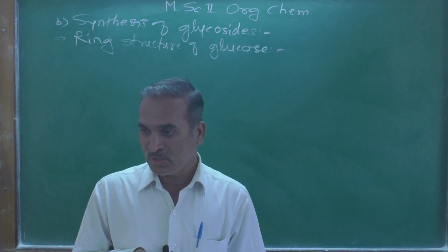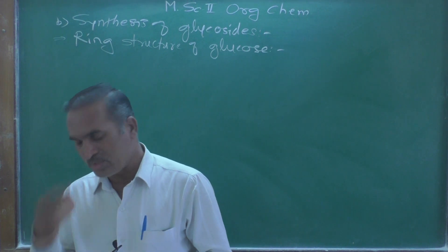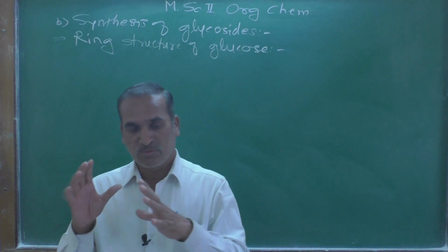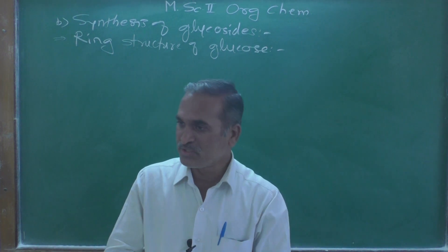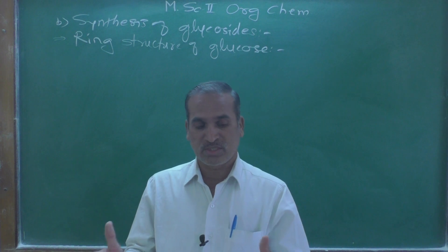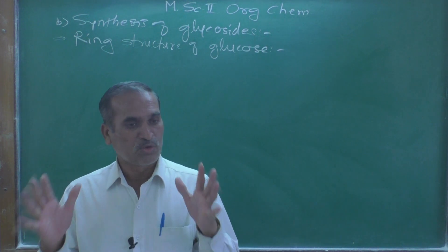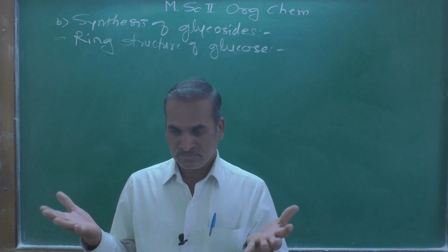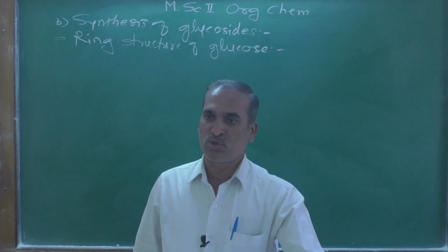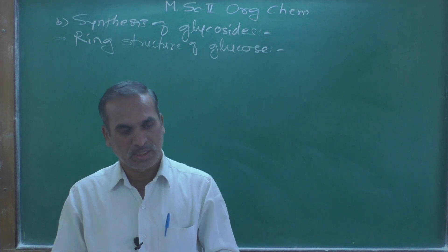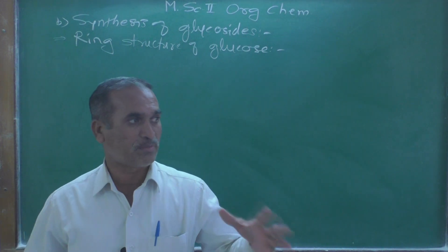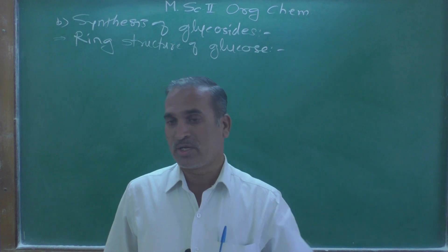Why is it necessary to study the ring structure of glucose? So far we have considered glucose as an open chain compound — a polyhydroxy aldehyde or ketone. Monosaccharides do not get hydrolyzed further; they are the simplest units of sugar. A disaccharide, however, when hydrolyzed, yields different monosaccharide units.